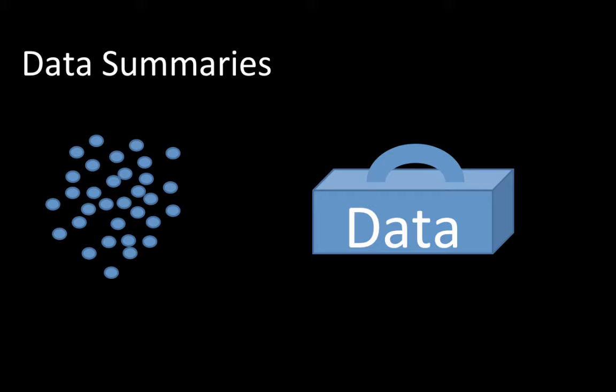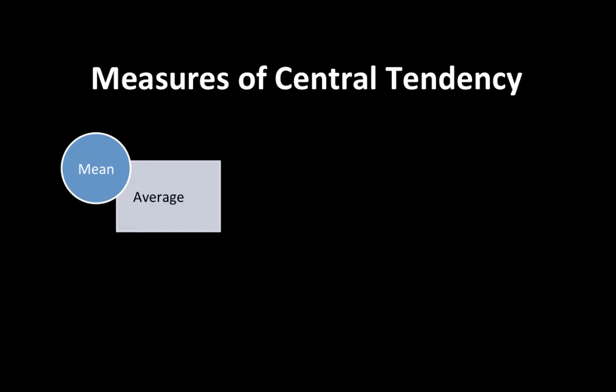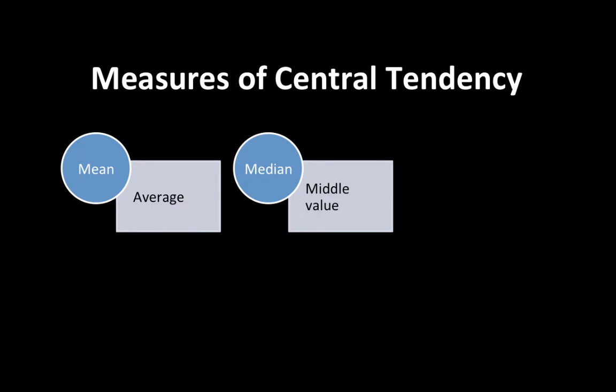A measure of central tendency is one number that is representative of the collective. One way to get it is to take the average — the mean — which is the most common approach. But that is not the only possibility. Another useful one is the median: if you arrange the numbers in order, the number that comes in the middle could be considered the most representative. Median is another equally valid and sometimes much less misleading representation of central tendency.